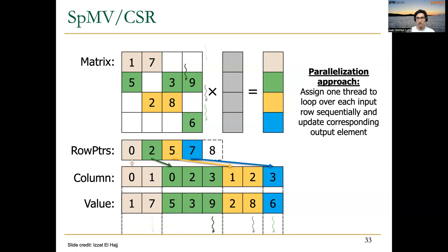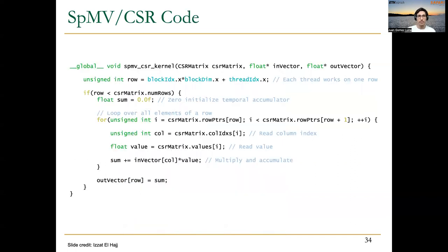One thing we can already see is that there is likely to be thread divergence — specifically inter-warp divergence — because different threads are working on different rows and different rows may have different numbers of non-zero elements. In the CSR code, we find the row each thread works on from the block index, block dimension, and thread index — each thread works on one row. We then iterate over all elements of that row, read the column index, read the value, perform the multiplication with the corresponding element of the vector, and accumulate into a sum variable that is written to the output vector at the end.